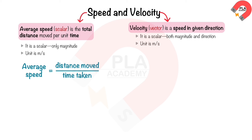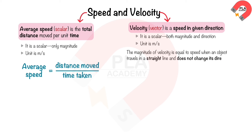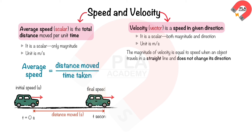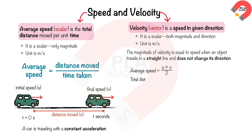The magnitude of velocity is equal to speed when an object travels in a straight line and does not change its direction. A car traveling at an initial speed of u for t seconds reaches a final speed of v and covers a distance of s meters, with constant acceleration. The average speed is (u + v) / 2, total distance moved is s, and total time is t. Therefore: (u + v) / 2 = s / t.